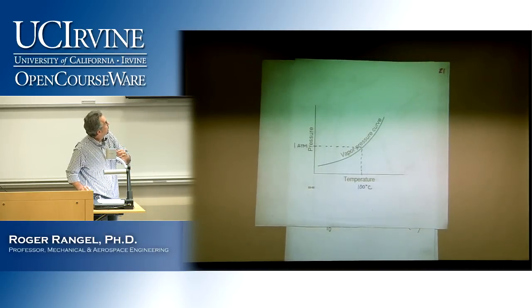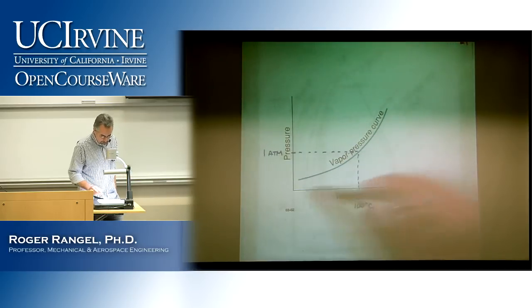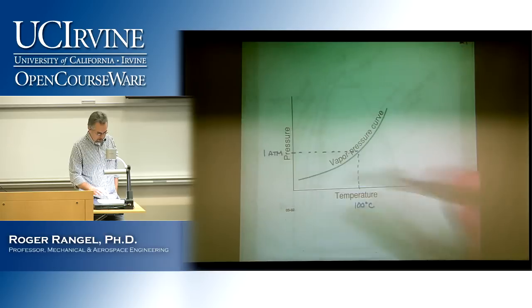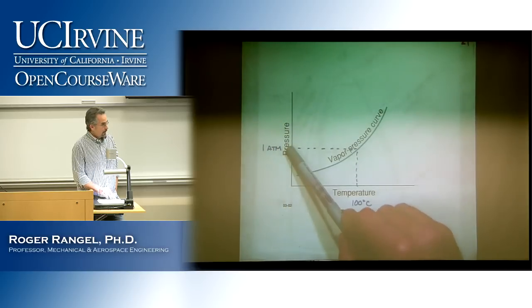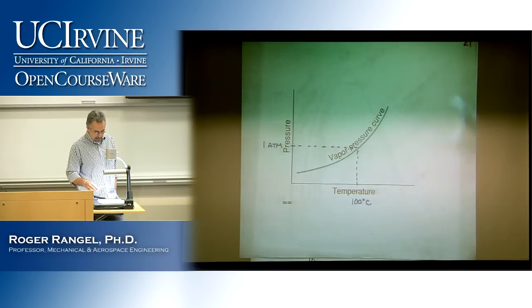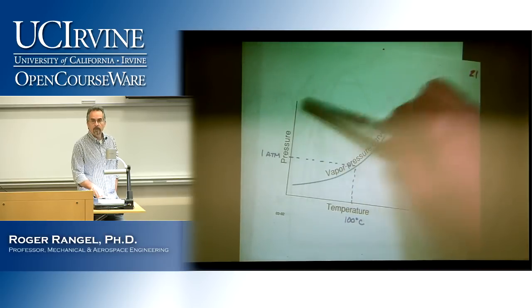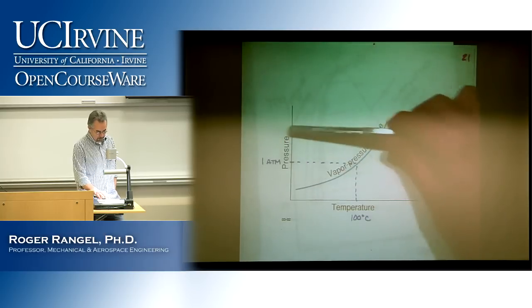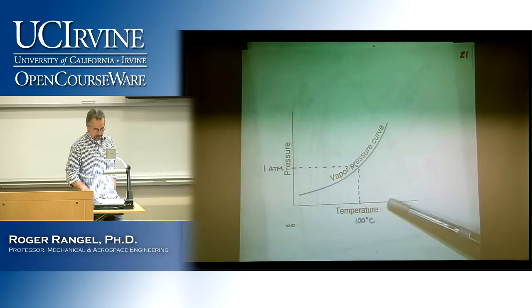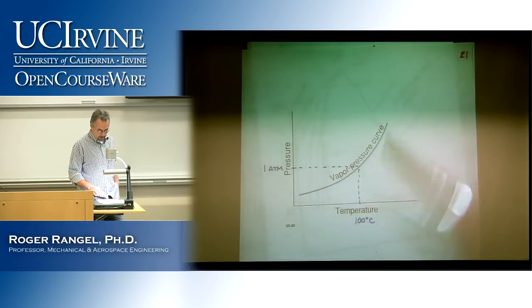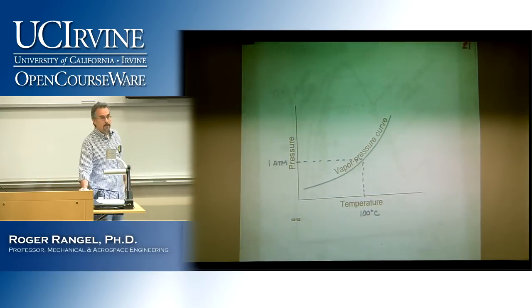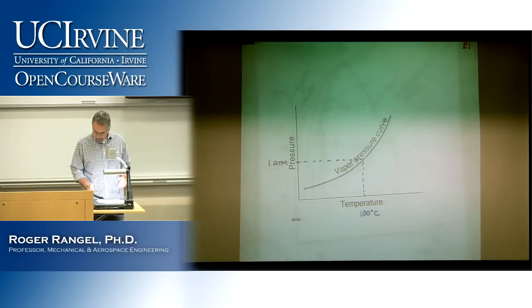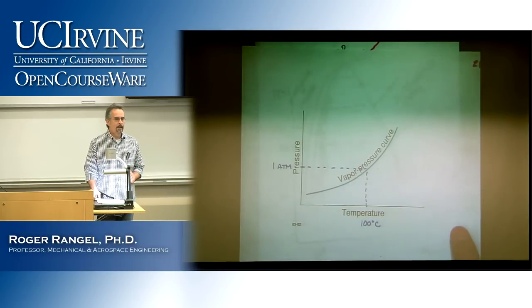At 1 atmosphere, evaporation began at 100°C — that's one point on the curve. Going to higher pressures gives higher temperatures, and so on. There is a curve related to the original T-v plot; it's just two ways of looking at the same data. These two plots are obviously connected — it's the same experiment viewed differently.